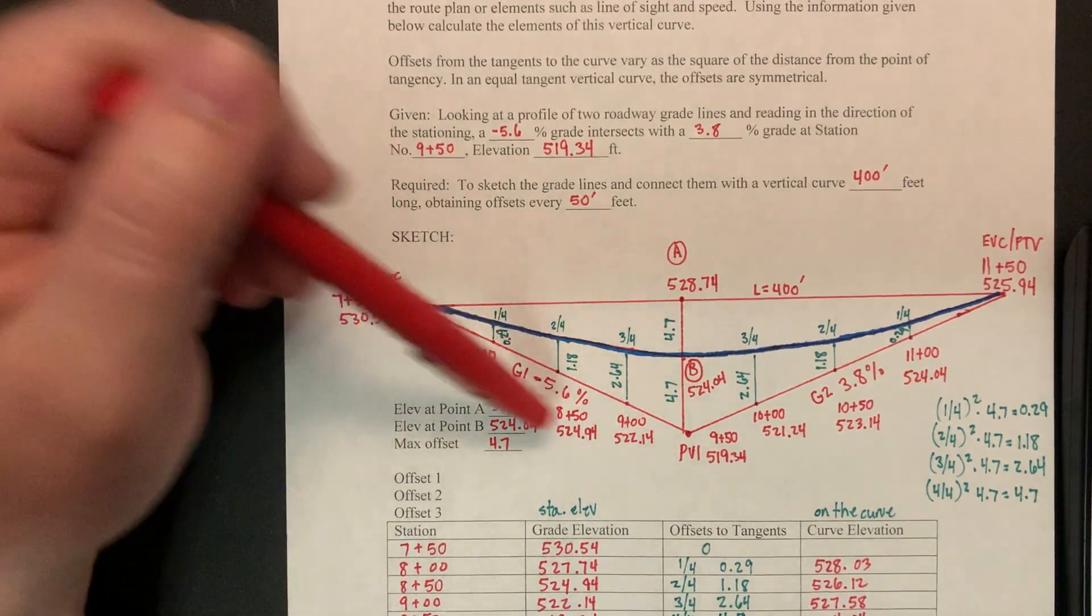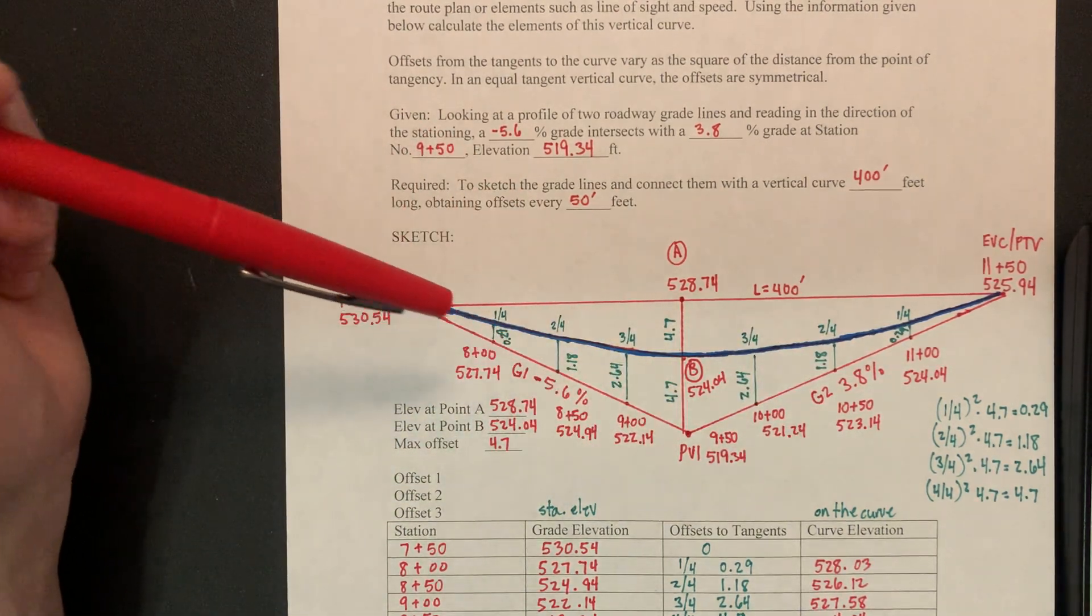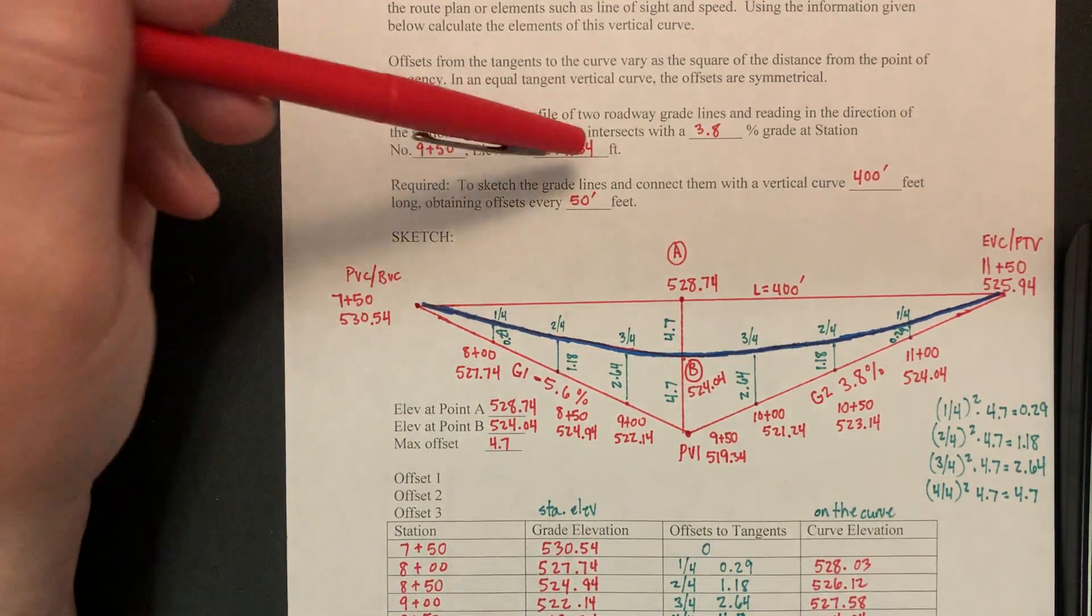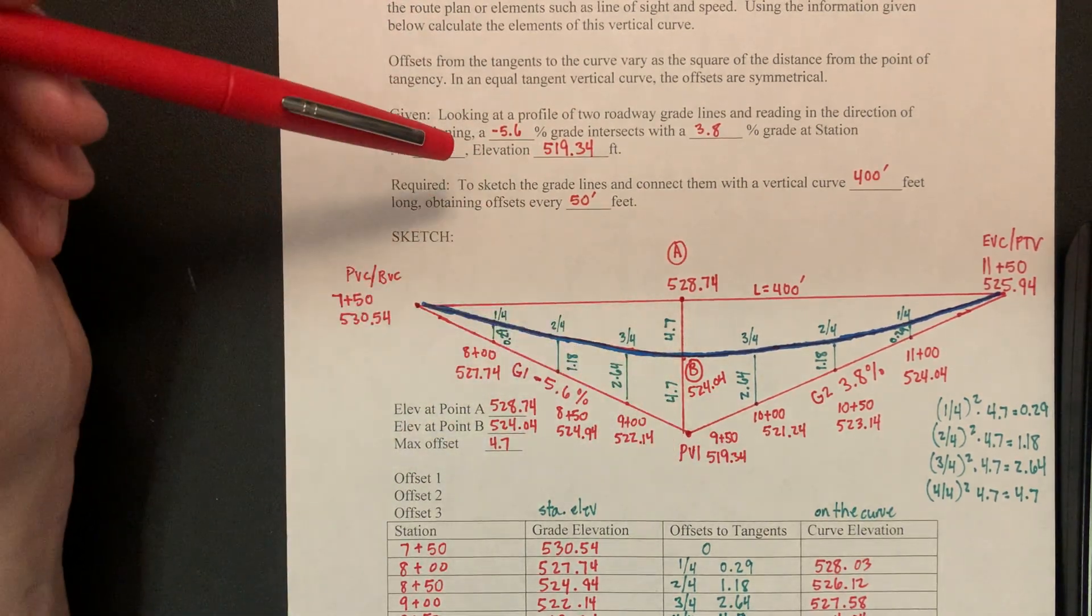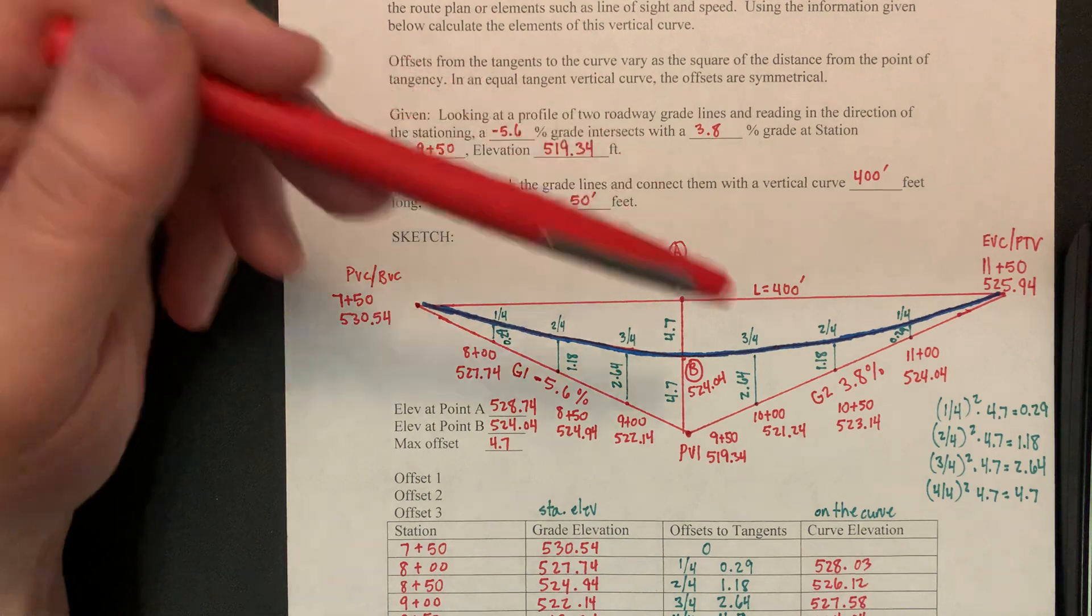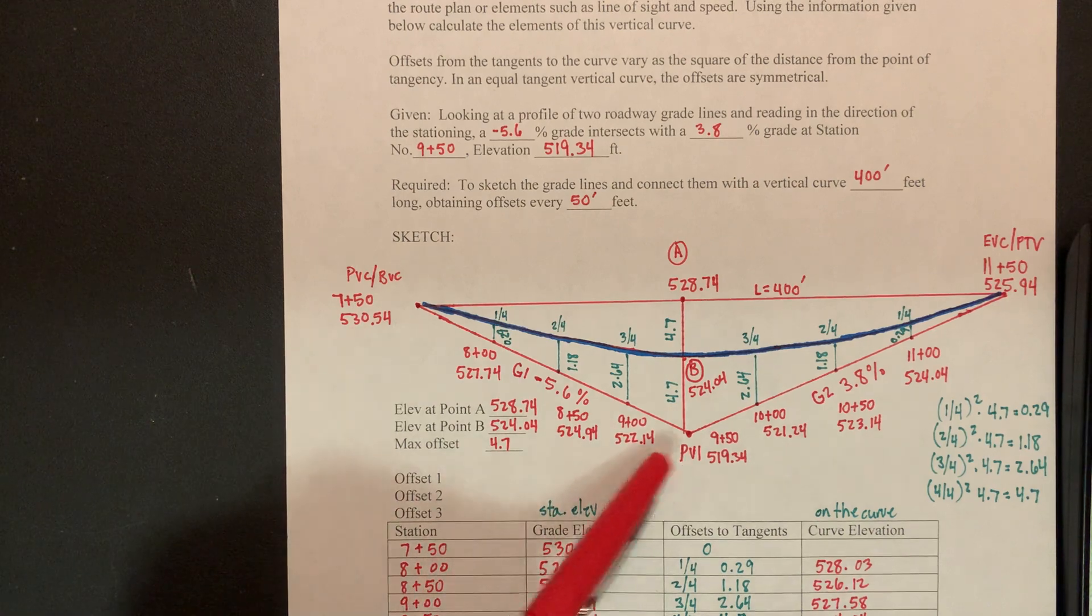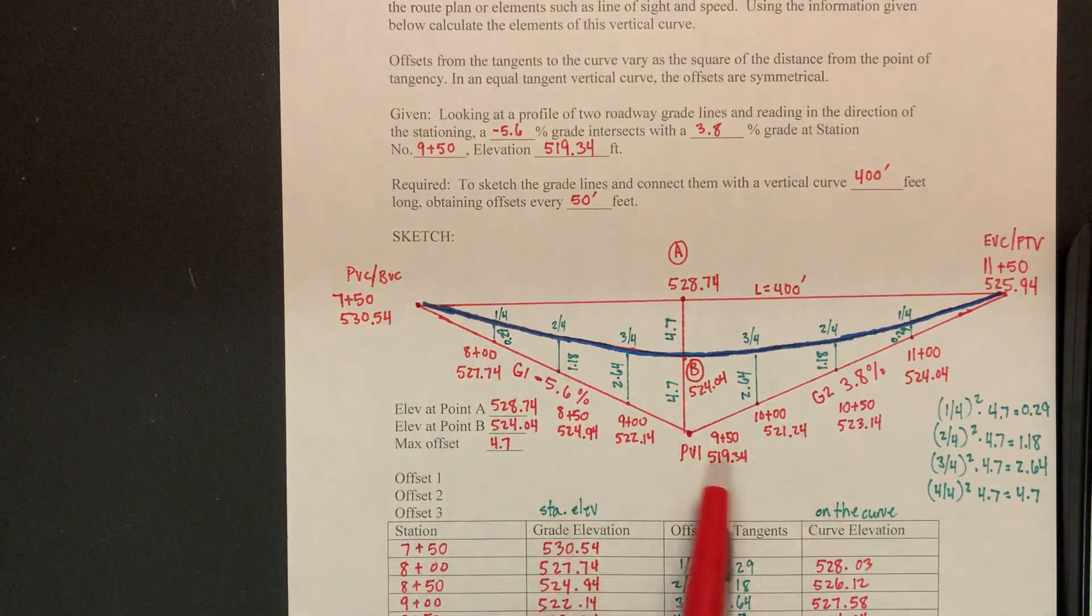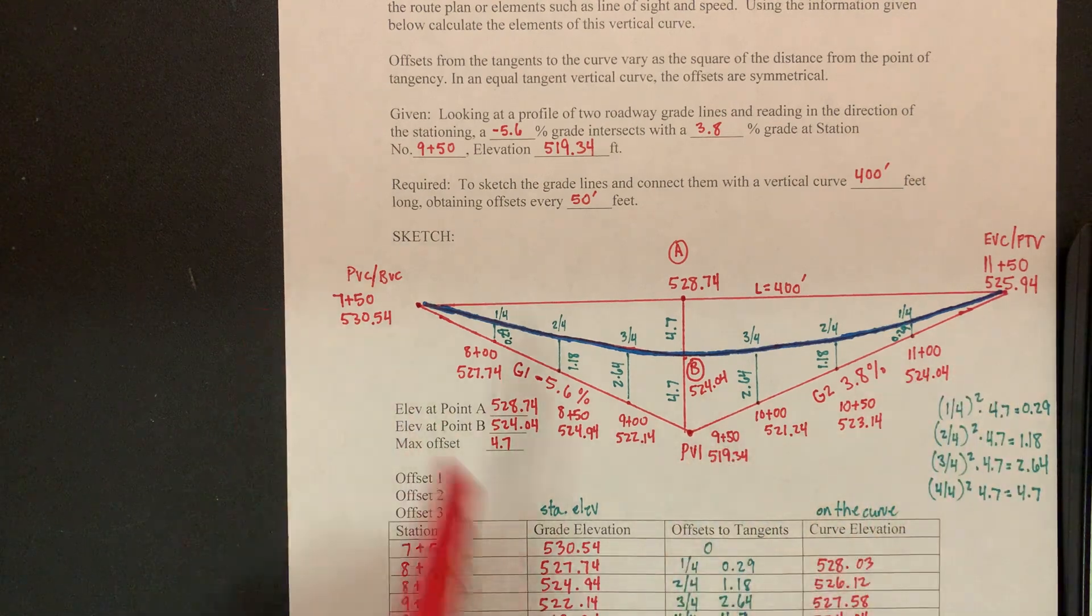So when I say we go negative down or 5.6% and I'm going to go up 3.8%, but we need to calculate the elevations first from kind of what we have. So the only one we were given in this problem was this station here, 9.50, and then the elevation of 519.34. So to calc this, we need to go 200 feet back, so this would be 9.50, this would be 8.50, this would be 7.50, and they wanted 50 foot stakes in between. So you go 9.50, you go 10, 10.50, 11, and there's your stations for this vertical curve.